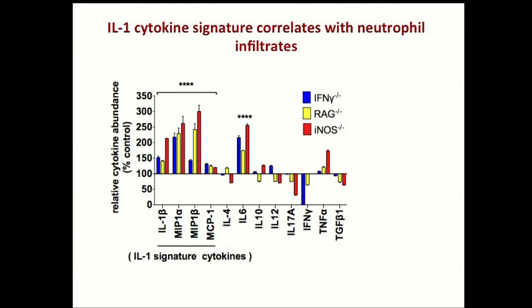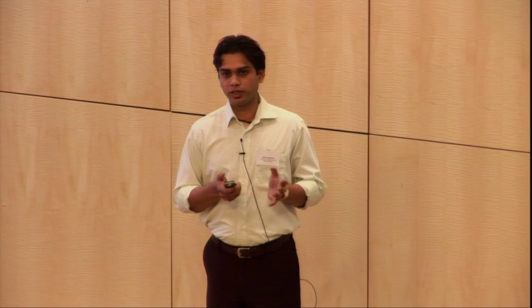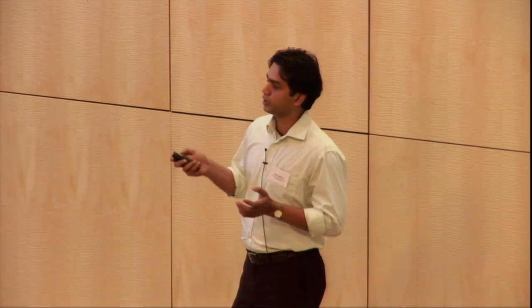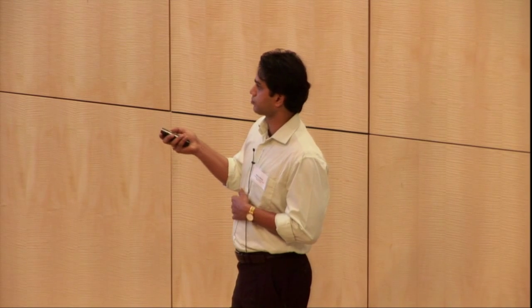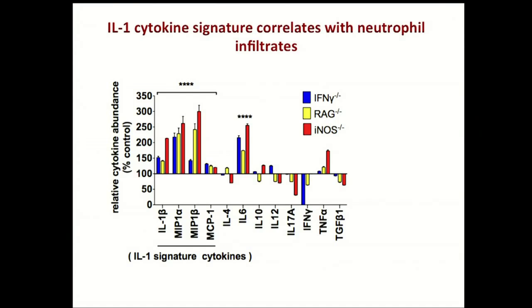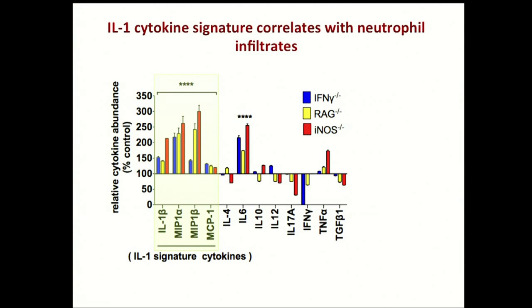Then we asked whether the tissue damage observed in these T cell-defective mice was because of inadequate control of bacterial numbers or because of an over-exuberant host immune response. For that, we profiled the lung milieu for different cytokines and chemokines. We found that all these knockout mouse strains have a typical cytokine signature, predominantly IL-1 driven — IL-1 and IL-1-driven chemokines and cytokines such as MIP-1-alpha, MIP-1-beta, and monocyte chemoattractant protein MCP-1. These chemokines and cytokines have been known to induce neutrophilic infiltration in various models.